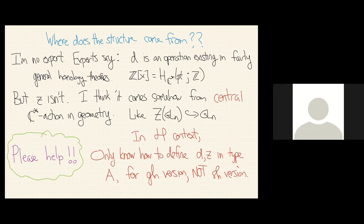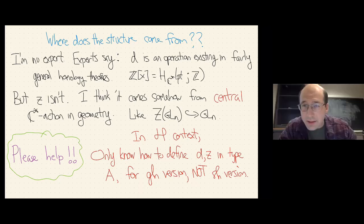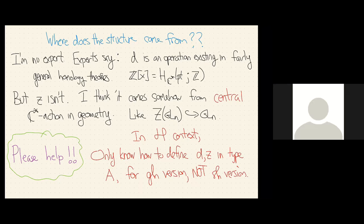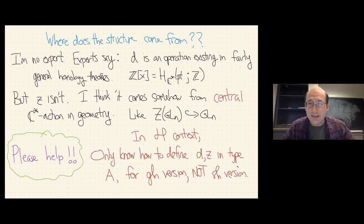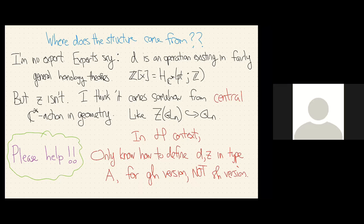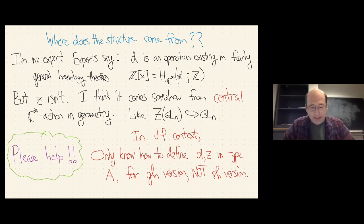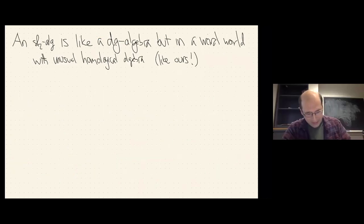Audience question: have you computed the obstructions to having the SL2 action come from a group action? Speaker: When is there an action of the capital SL2? There's an obstruction for integrability of the action — some higher cohomology class. But all these things are infinite dimensional, and I don't really know how to proceed. We'll talk about this during the break.